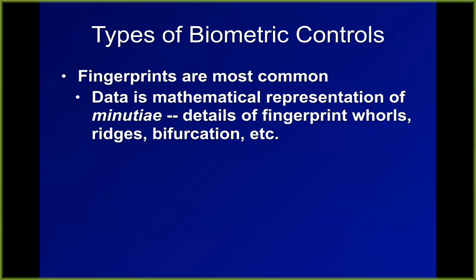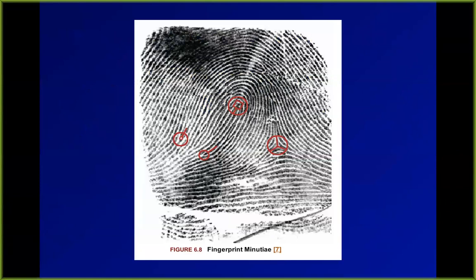Fingerprints are the most common. They do not actually store a photograph of your fingerprint — typically they extract points called minutiae: places where lines converge. They store some number of minutiae in digital form. One thing people like to say is that even if someone hacks your iPhone and steals its image of your fingerprint, they wouldn't be able to totally forge your fingerprint from that.